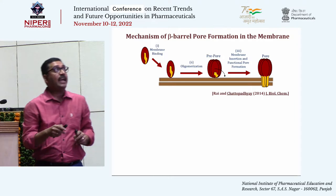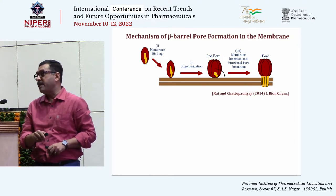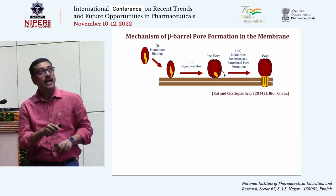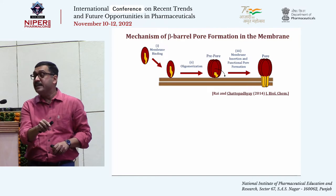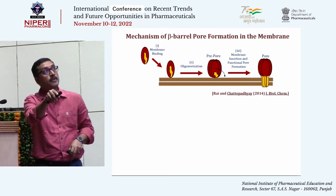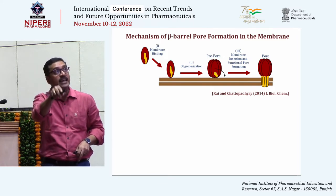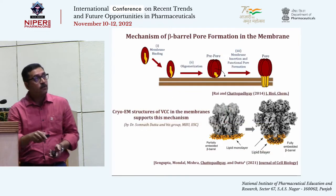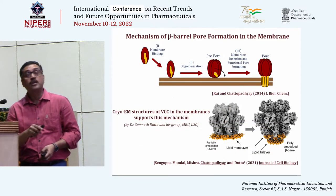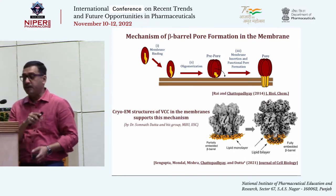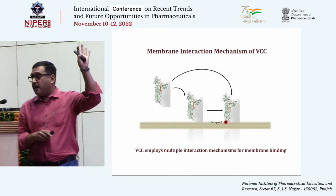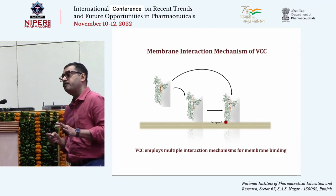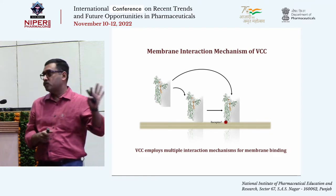Through our studies, we have elucidated discrete steps of the pore formation mechanism employed by VCC. Monomeric units first bind to the target membrane, then assemble into a transient intermediate called the pre-pore. Subsequently, the pore-forming motifs from this pre-pore insert into the membrane, creating the functional pore. In a very recent collaborative cryo-EM study, we confirmed that VCC indeed follows this overall architecture and forms a pre-pore intermediate in the process of functional pore formation.